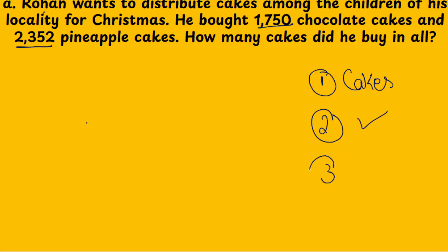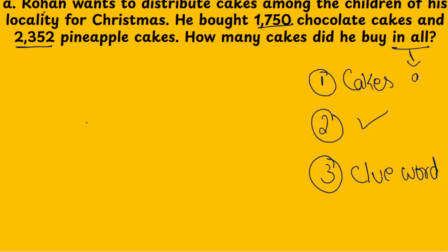The third step is to find out the clue word. What is the clue word — whether it is addition, subtraction, multiplication, or division? For addition, the clue here is 'in all,' so we can conclude that it is an addition.